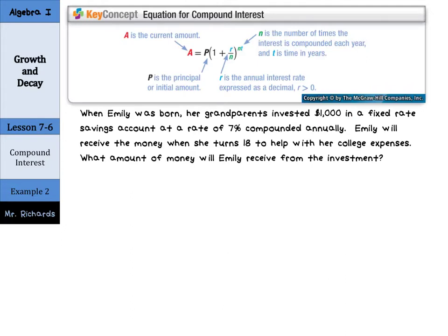And so our equation for compound interest will have A as the current amount equals P, which is the principal or initial amount. And then this is where it's just a little bit different. We have 1 plus R over N, where R is the annual interest rate, and N is the number of times the interest is compounded each year, with T being our time in years, and this is to the N times T power. So, knowing the formula and knowing how to use it is important.